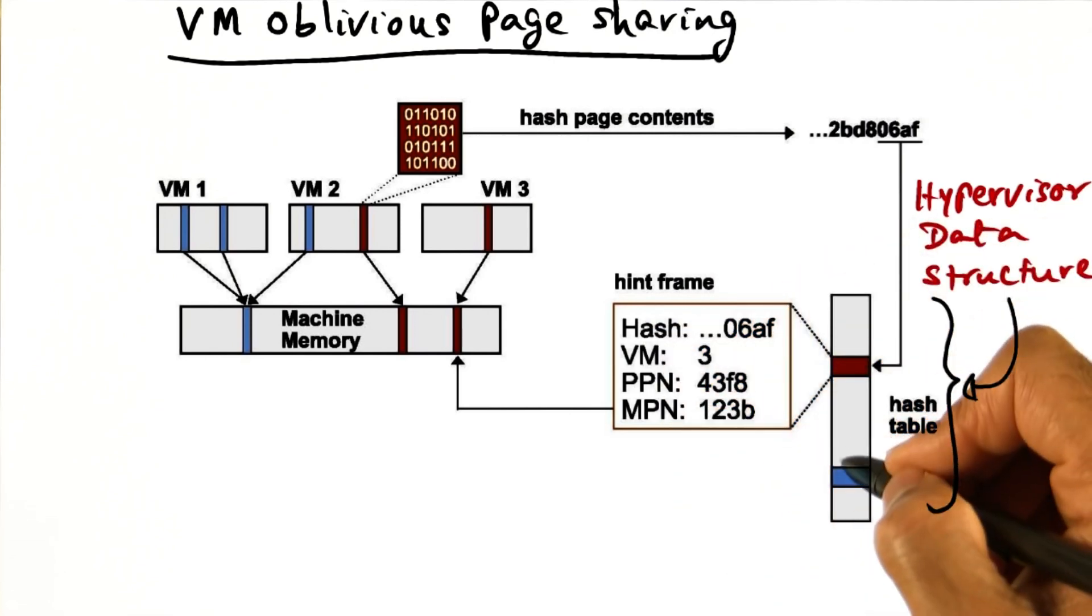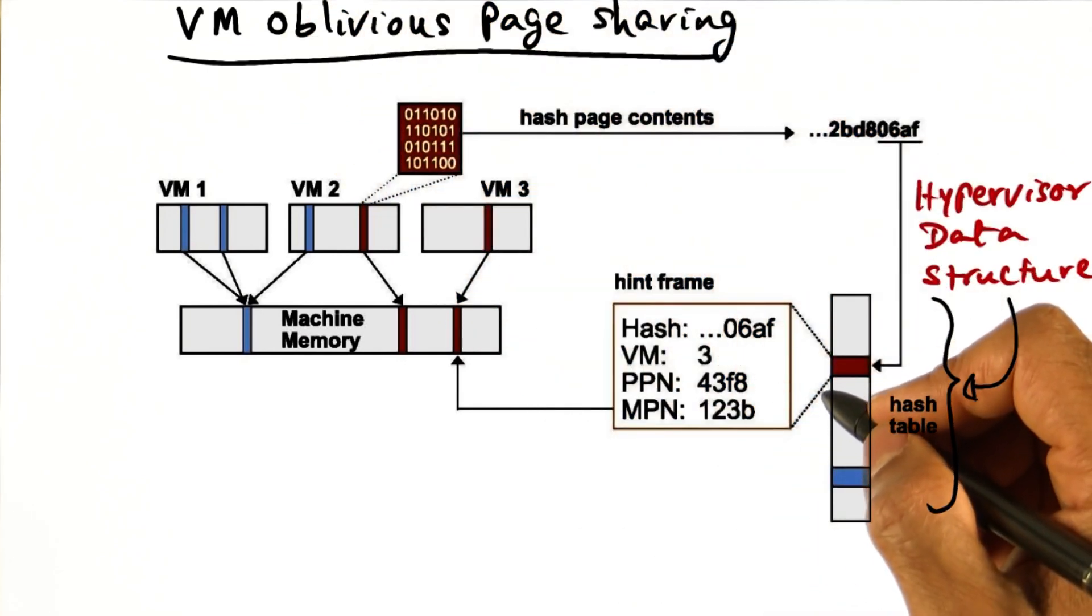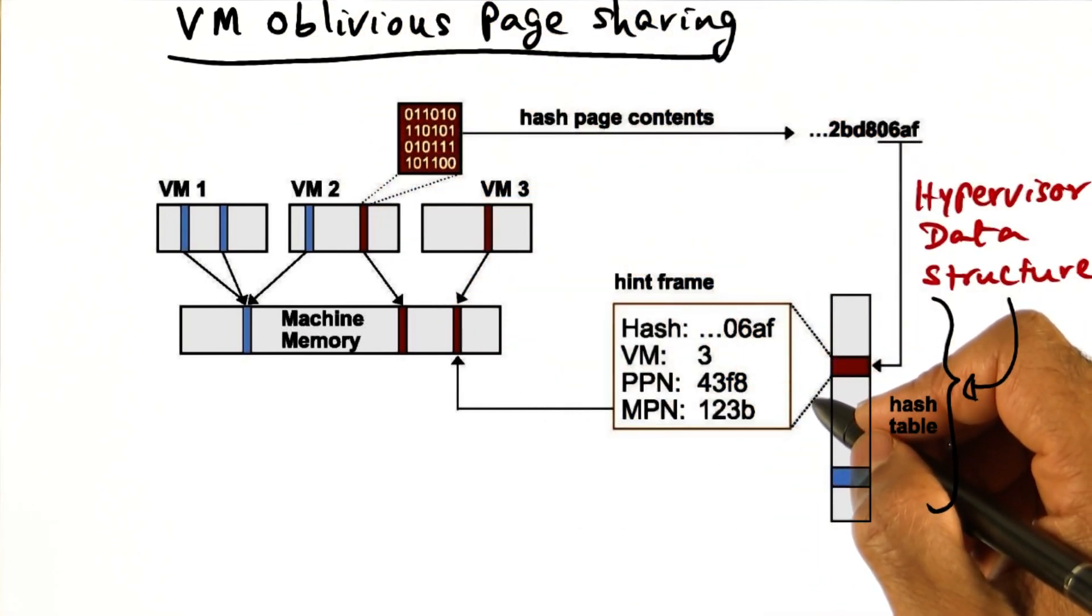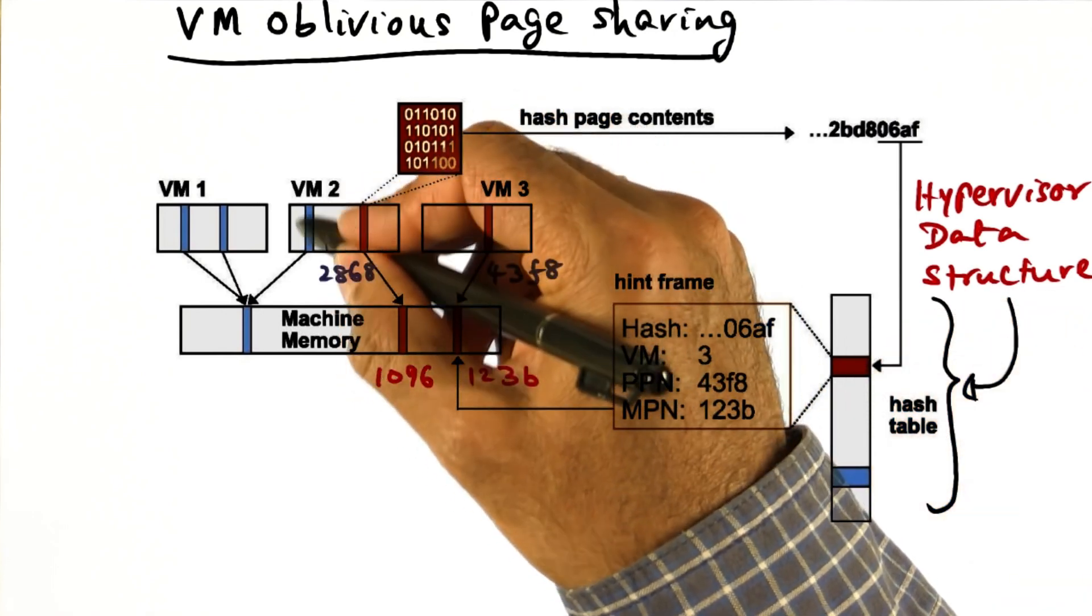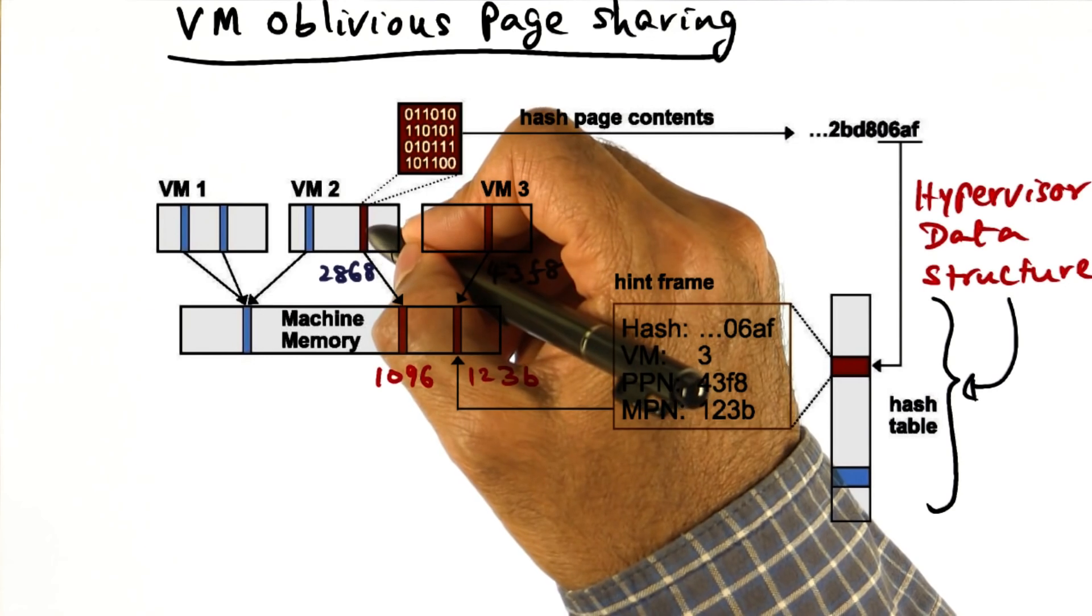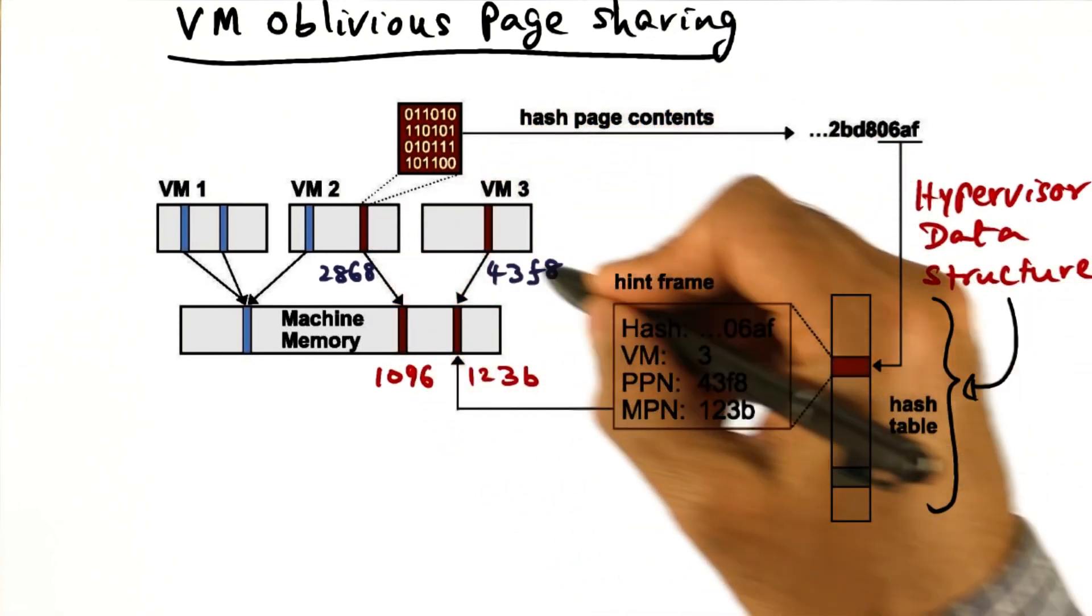Now let's see how this data structure is used for doing VM oblivious page sharing in the ESX server. We want to know if there is some page in VM2 which is content-wise the same as this guy.